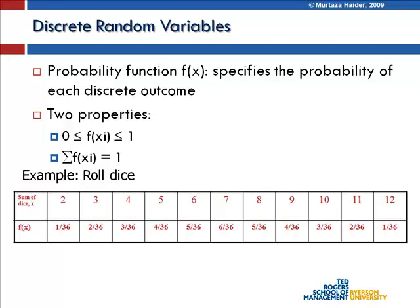The probability function, represented as f(x), specifies the probability of each discrete outcome. Two specific properties of discrete random variables: the probability function must be greater than or equal to 0 and less than or equal to 1, and the sum of all probability functions must equal 1.